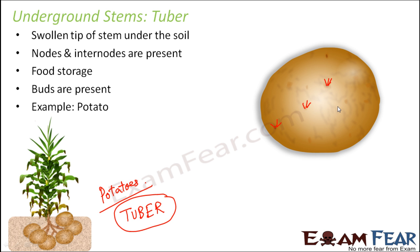Not only potato, but many other plants — for example, ginger, onion, and garlic — also have underground stems, but the modifications in each of them are slightly different from each other. Although all of them are underground, they are structurally slightly different. We have talked about this specific modification of stem for potato, which is termed a tuber, and it is primarily used for food storage. Let's look at another underground stem modification.